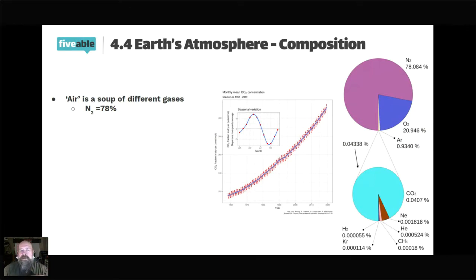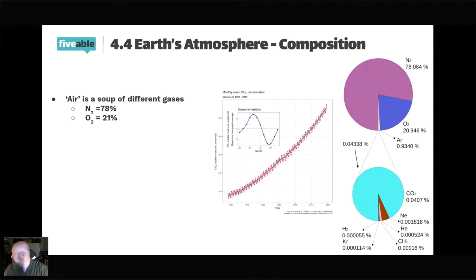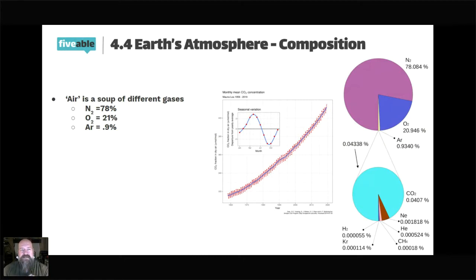Nitrogen just helps to add to the 'soupiness' of our air. The next important component is oxygen — about 21%, or more precisely 20.96% — which allows you to do cellular respiration. You won't even use all that oxygen; you'll breathe a portion back out. Those are the two largest components. The next largest is argon, one of those noble gases that doesn't play well with others, and from there a whole bunch of trace gases.